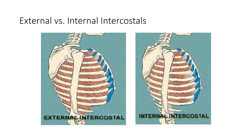The external intercostals course downward and forward; when they contract, they stretch out the costal cartilages between the ribs and the sternum. Since the internal intercostals run downward and backward, when they contract they pull the ribs downward, which returns those stretched costal cartilages back to their original state, or compresses them further by drawing the sternum toward the ribs.